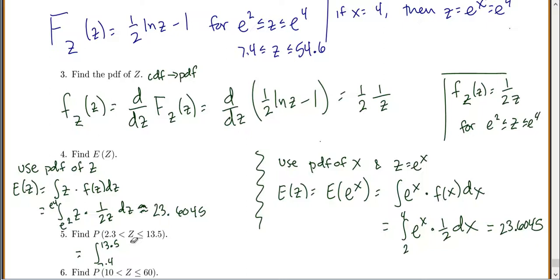When you want to find the probability, actually there's two ways you can do this. You can integrate the PDF of z, and that's just what I thought of first, so that's what we're going to go ahead and do, and then we'll do the other one on number 6.